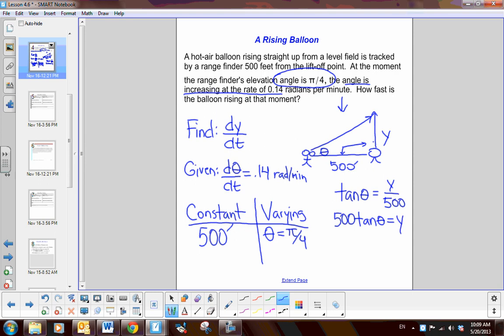So, the goal is to write a function and now to take the derivative in respect to time. So, I'd have 500 and the derivative of tangent is secant squared theta. And now, remember, I'm taking the derivative of theta in respect to time and this will be equal to dy in respect to time.